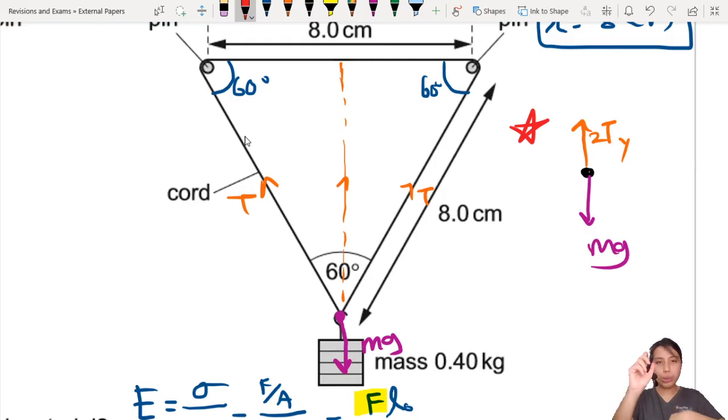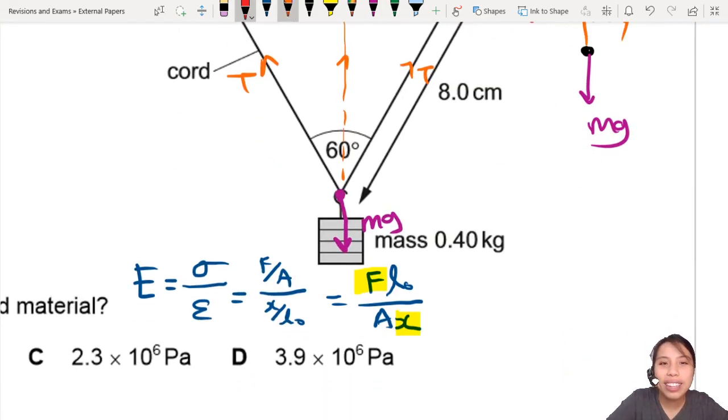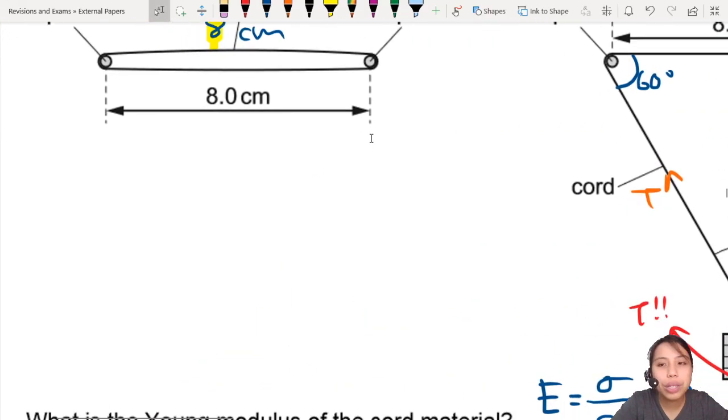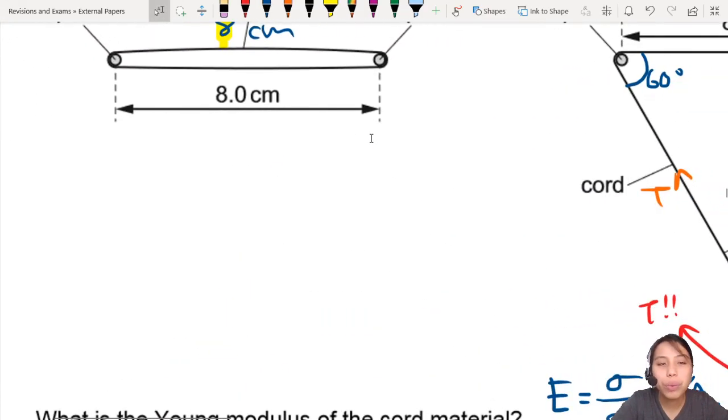We need to find T. This is T we need to plug in. So 2·Ty equals mg. Let's take another space to write out some working. We know that because the object is in equilibrium, the mass is just hanging there, so 2·Ty equals mg.